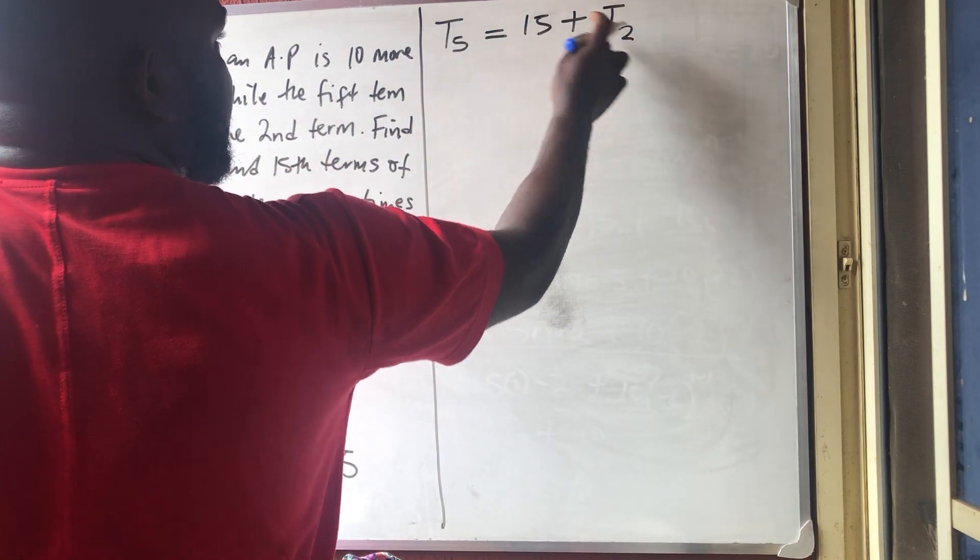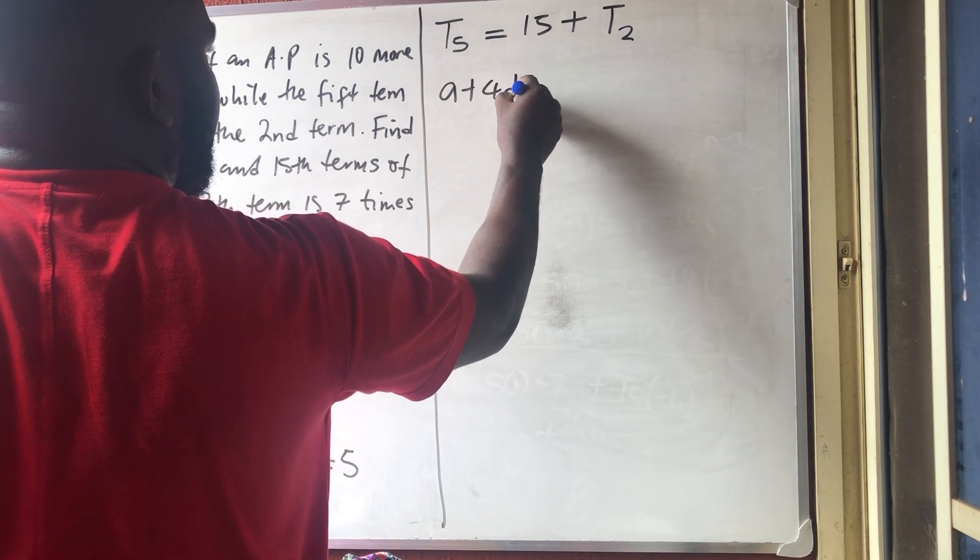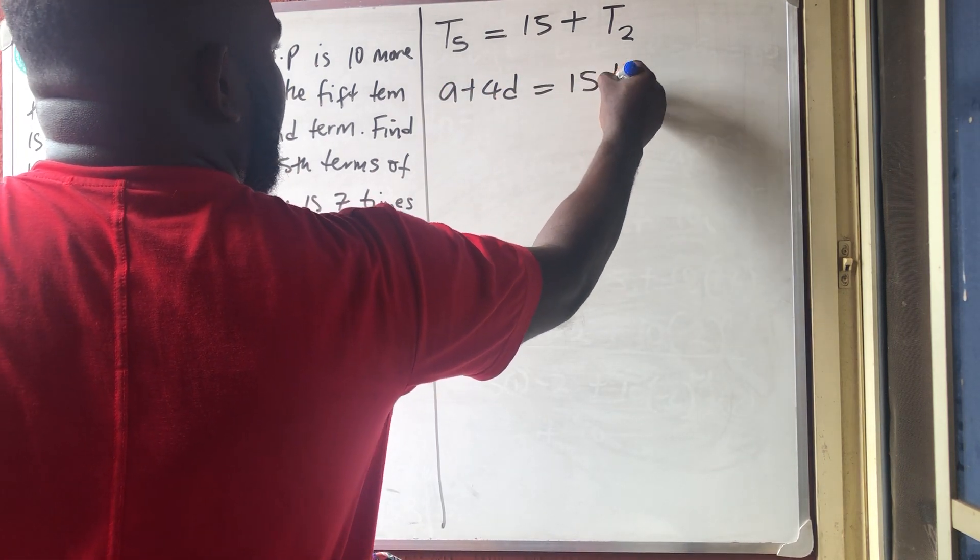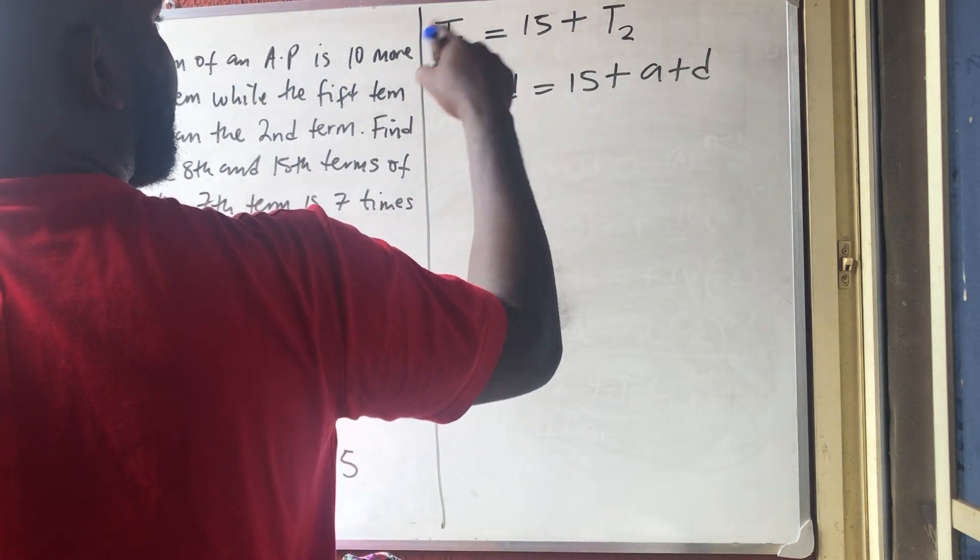So, let me put down the two formulas. The fifth term is given by A plus 4D. Is equal to 15 more than A plus D. Because the second term is A plus D. If I collect items again,